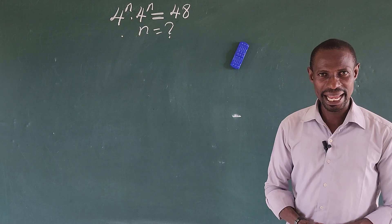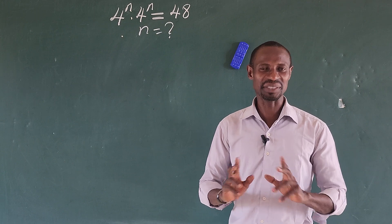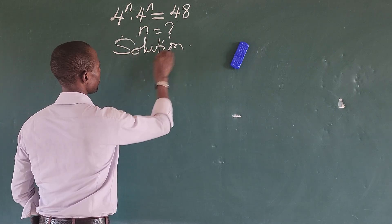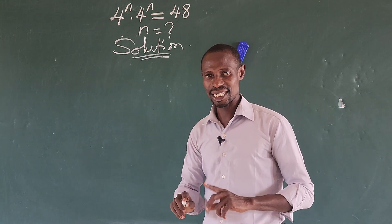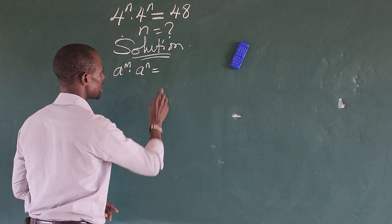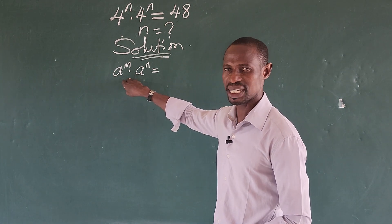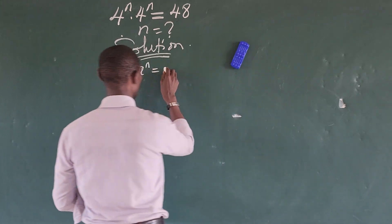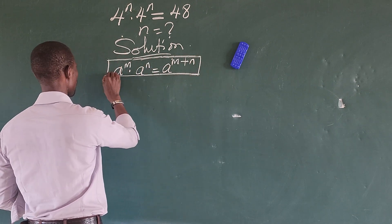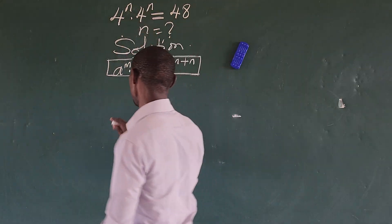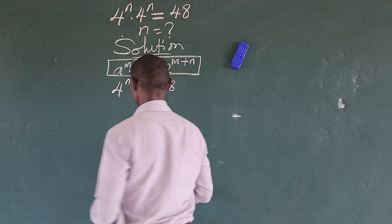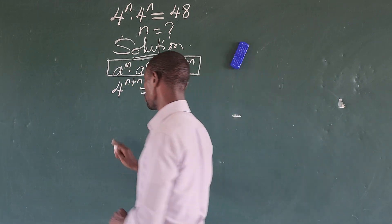At the end of this session we are going to verify our answer to confirm it satisfies the original equation. Now, there is a law in indices which says that if you have a to the power of m times a to the power of n — so long the bases are the same with a multiplication sign — you sum up the powers: a to the power of m plus n. Applying this here, we get 4 to the power of n plus n, which equals 48. Adding n and n gives us 2n, so we have 4 to the power of 2n equals 48.